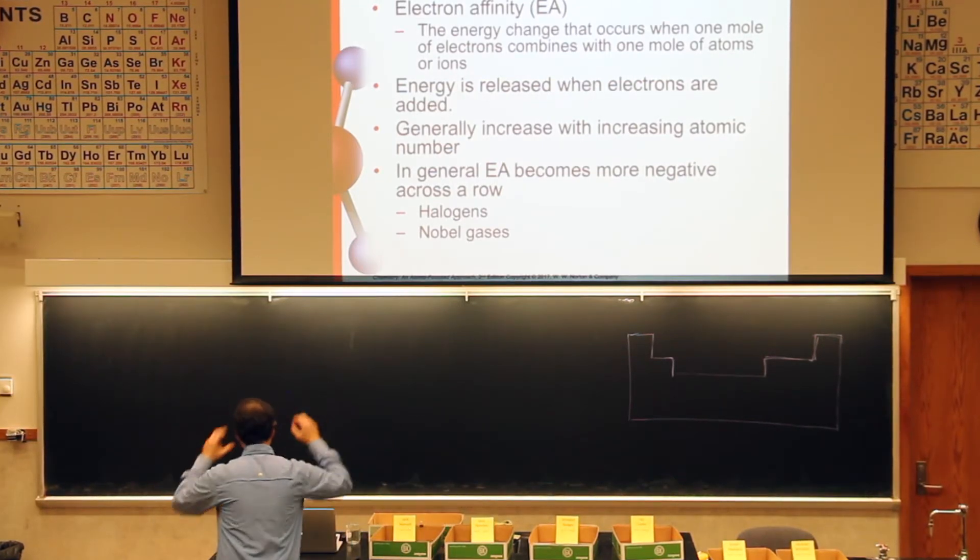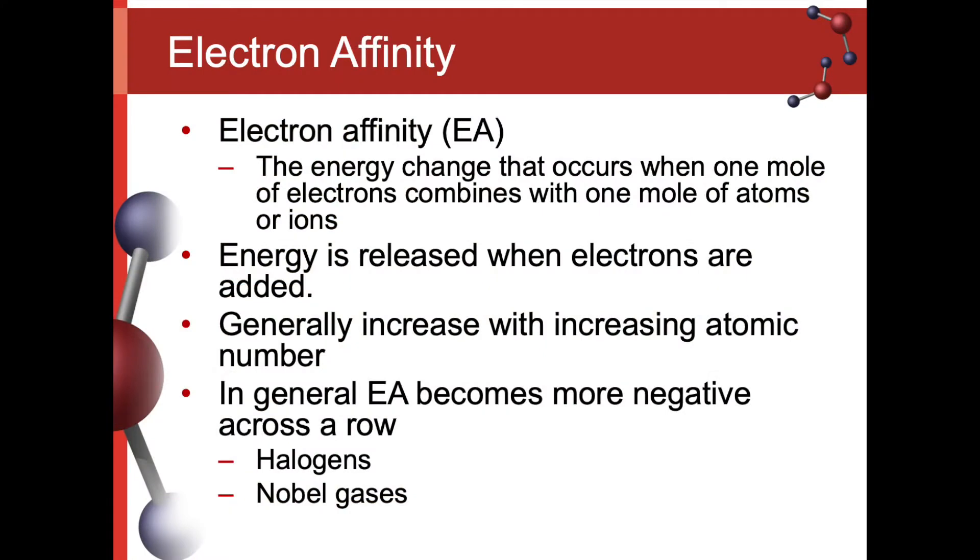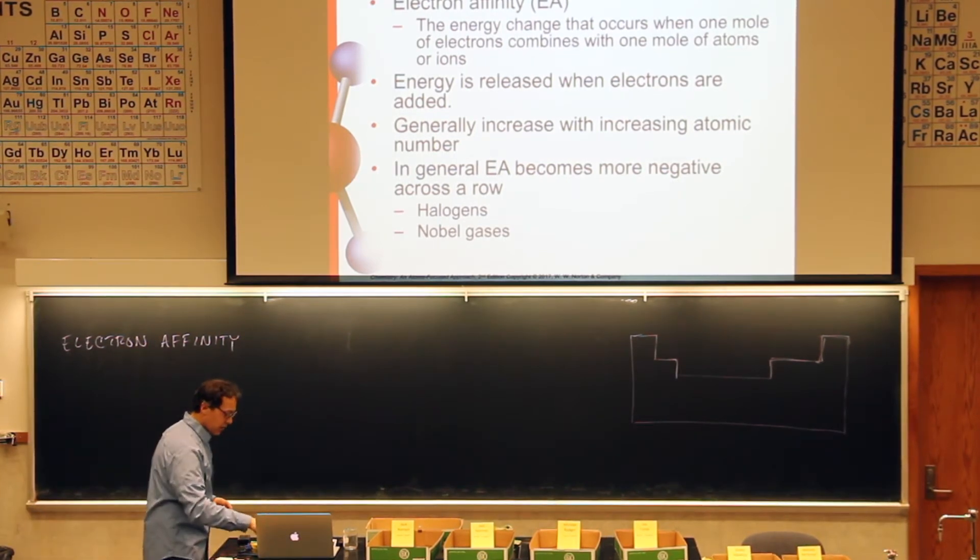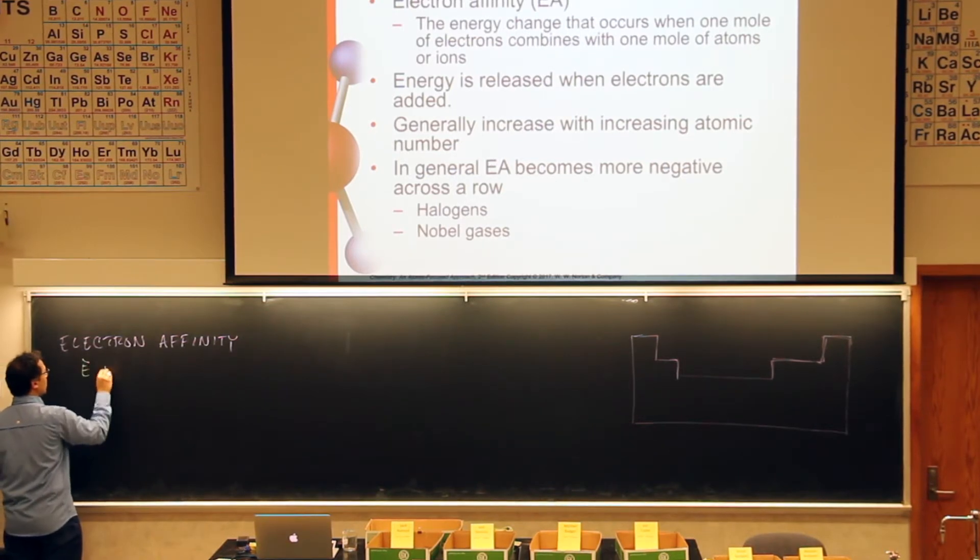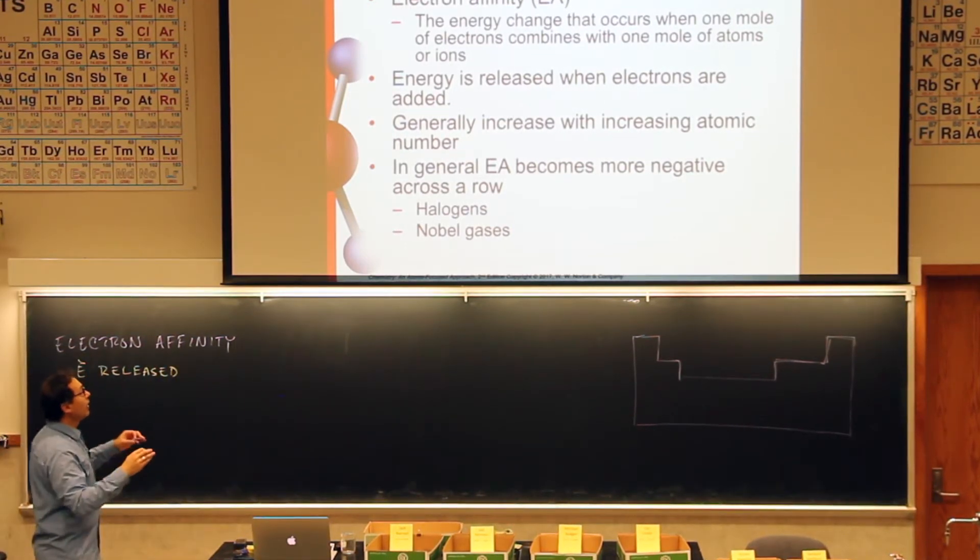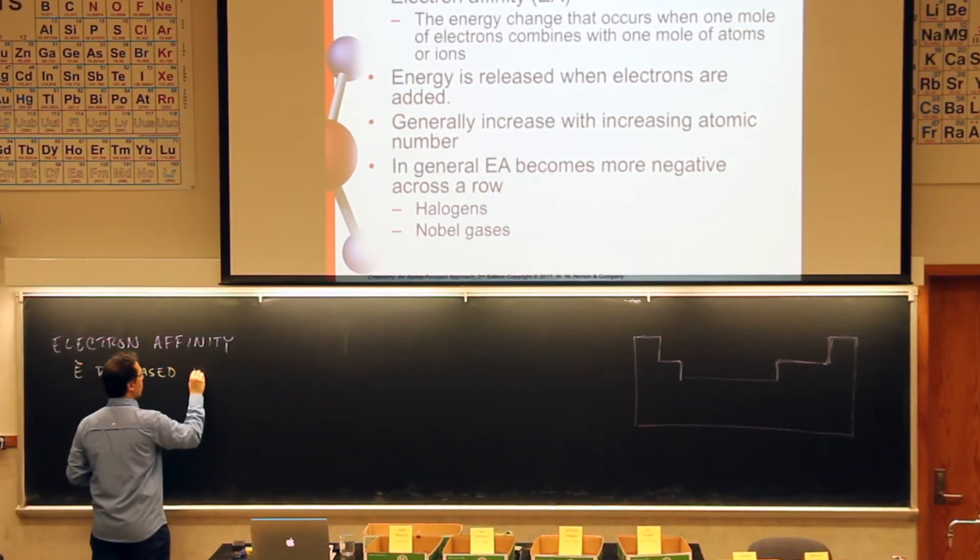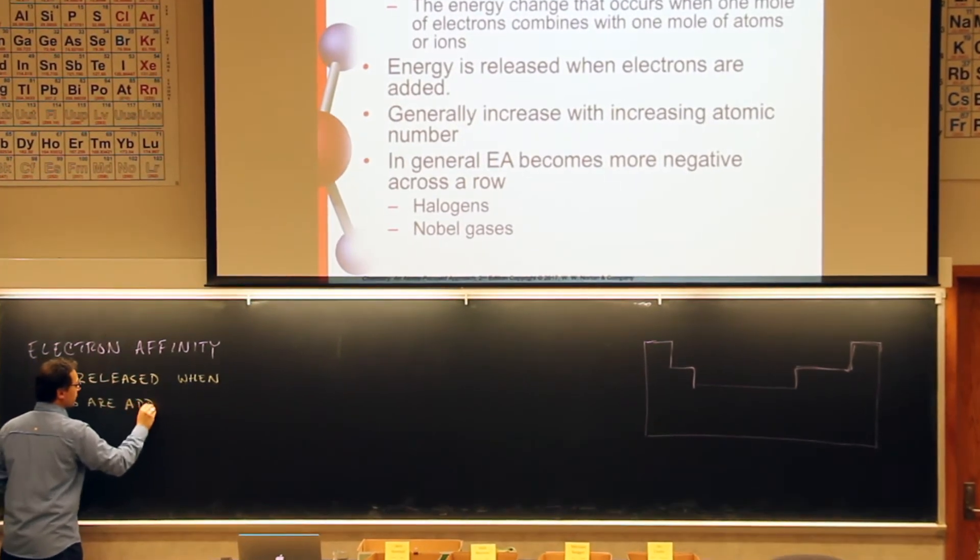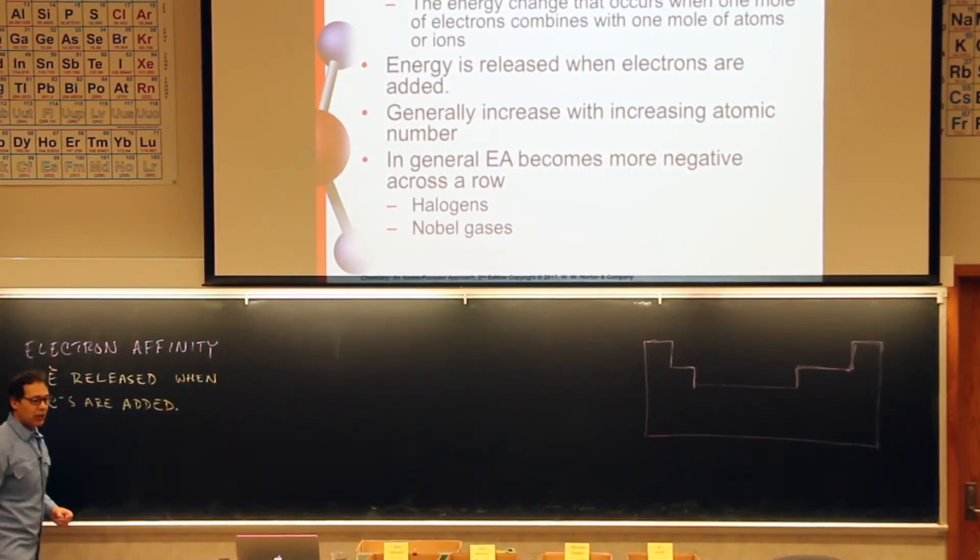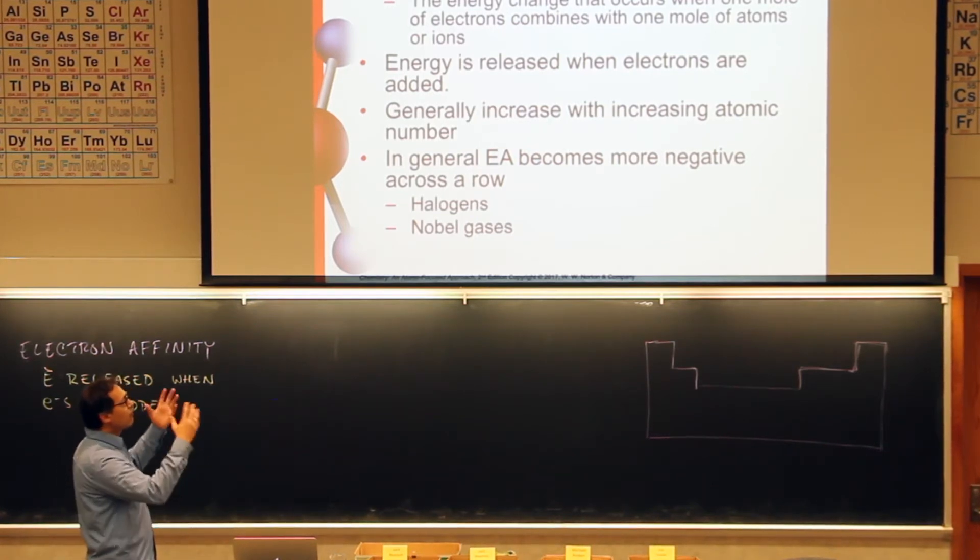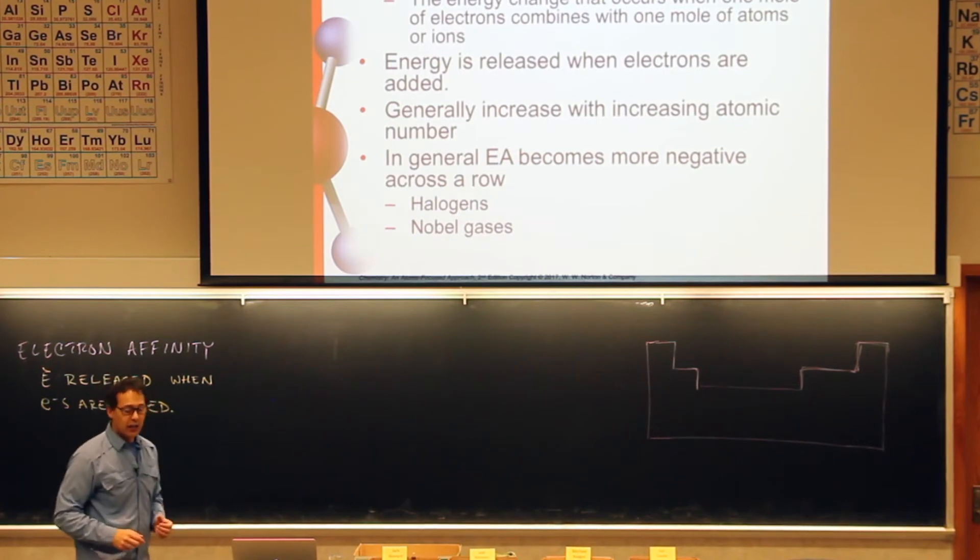For our purposes, we're going to say that electron affinity is the energy that is released when electrons are added to an atom. Generally, we have more energy released as we move to the right-hand side of the periodic table.